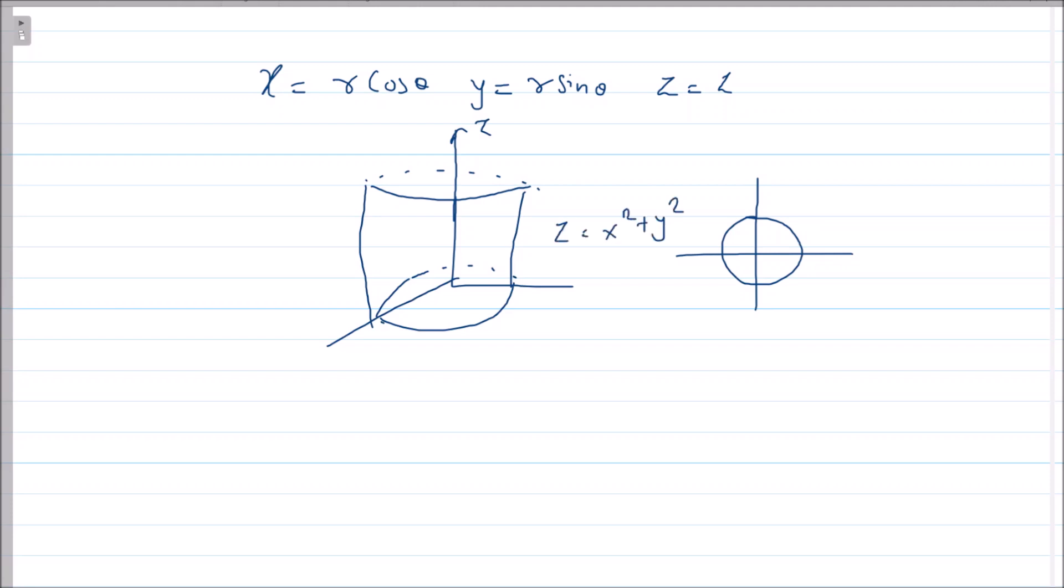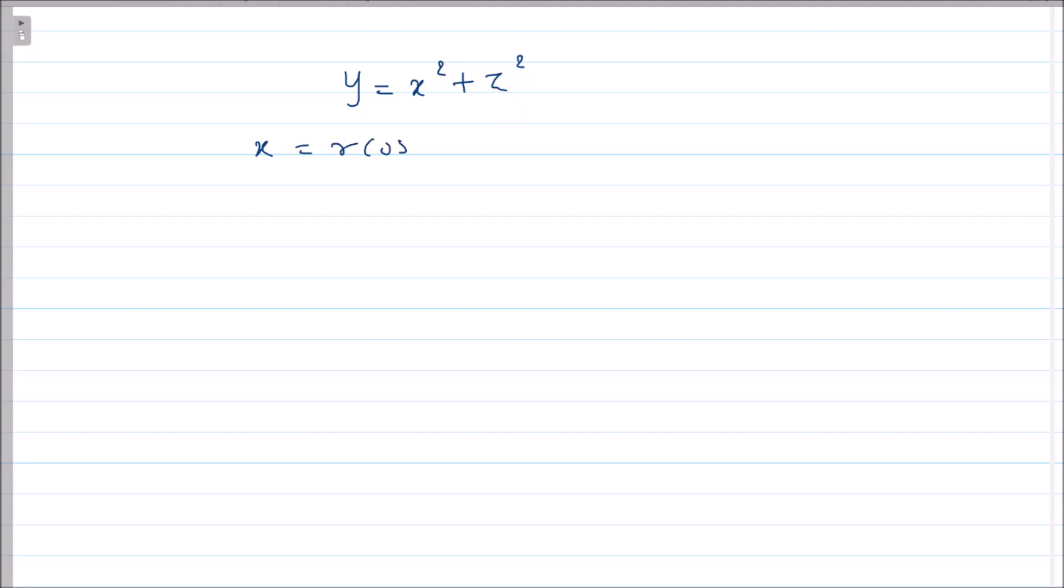Now in this scenario you have y = x² + z². So what we do is we will put x = r cos θ, we keep y as it is, and we put z = r sin θ.